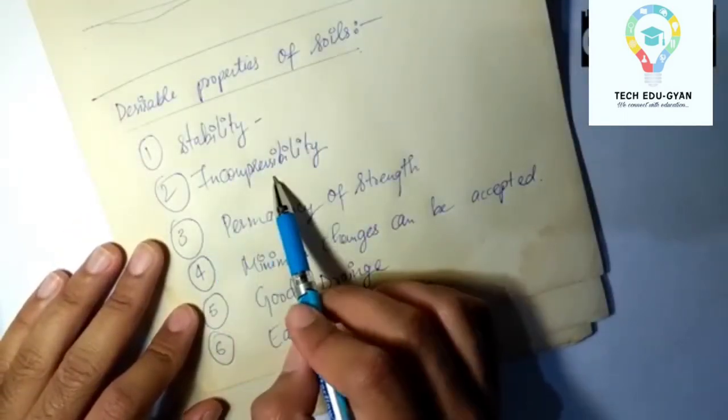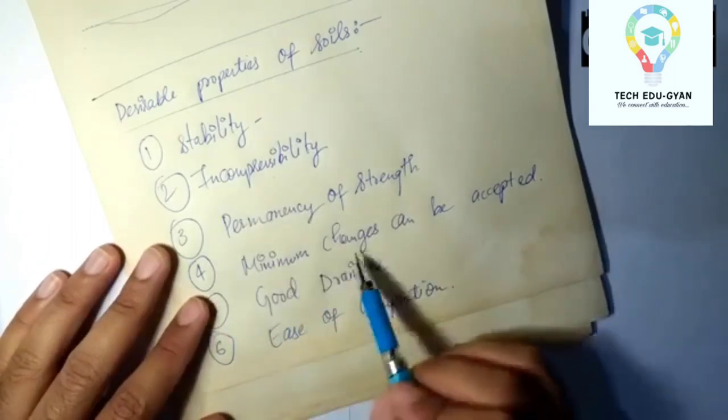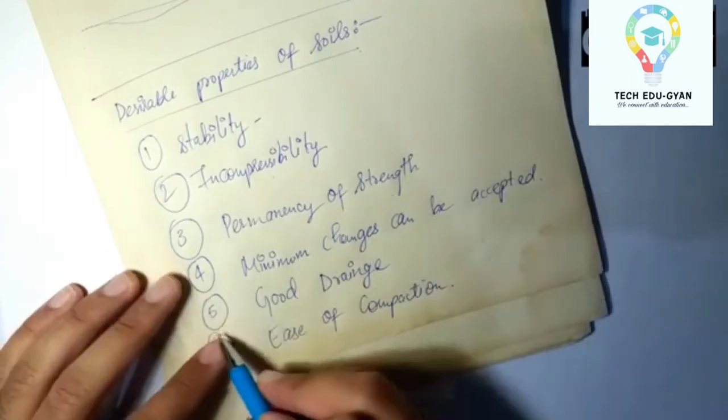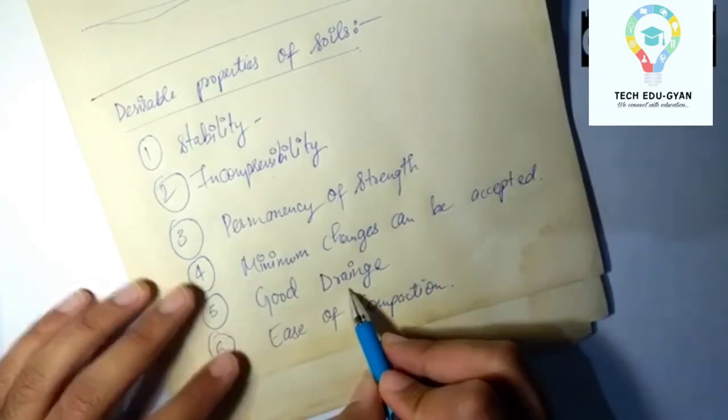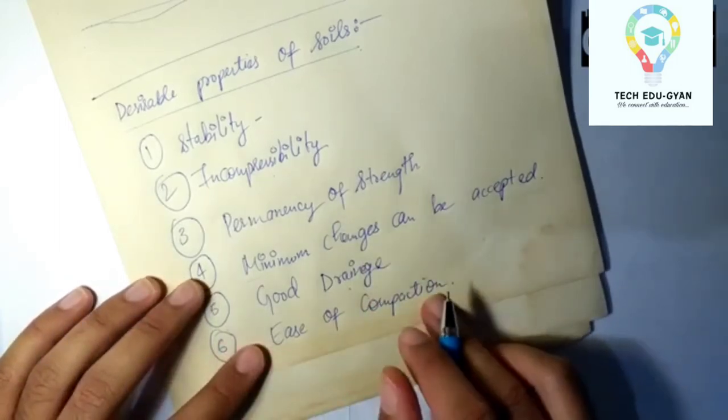The first one is stability, second is incompressibility, the third one is permanency of strength, the fourth one is minimum changes can be accepted under adverse conditions, the fifth one is good drainage, and the sixth one is ease of compaction.